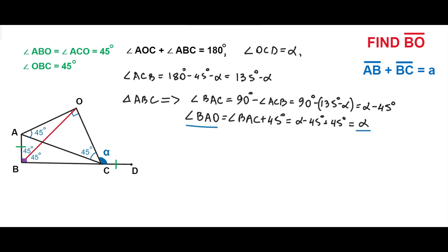So now let's compare triangles ABO and CDO. The segment AO and segment OC are congruent because triangle AOC is an isosceles right triangle. The segments AB and CD are congruent, and the angles OCD and OAB are congruent and both equal alpha.